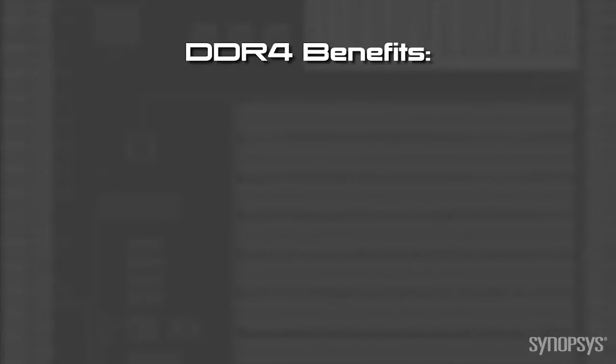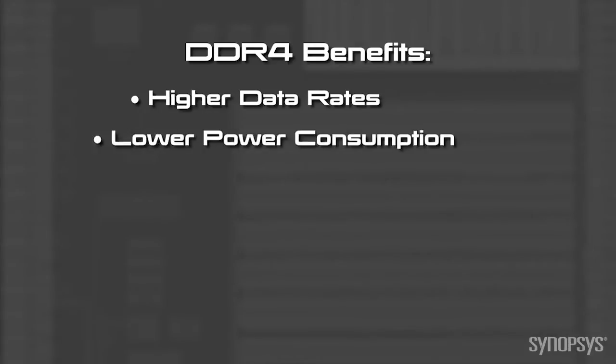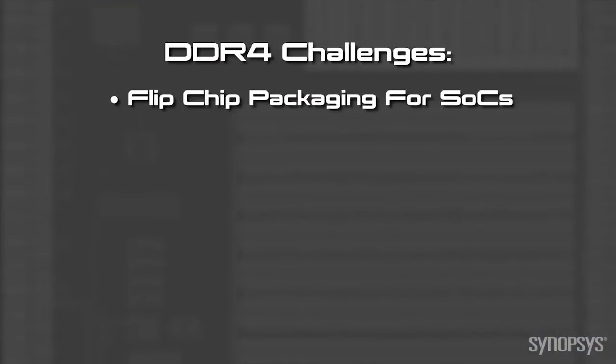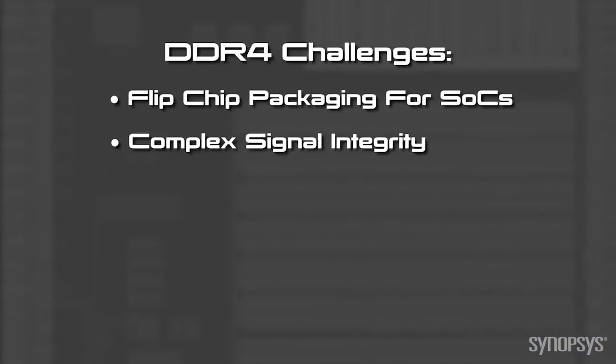With the increased demands in mobile applications for features and power, how are customers going to be able to use DDR4? Some of the customer benefits include higher data rates — that's very important. The power consumption is going to be lower because the DRAM voltage is lower. So it's faster and lower in power consumption. And in terms of cost, eventually when these SDRAMs hit volume, they'll actually be cheaper than DDR3 SDRAMs. However, there are challenges in terms of flip-chip packaging and some of the signal integrity effects.